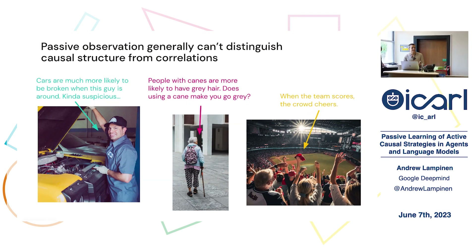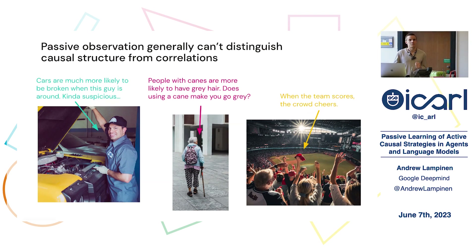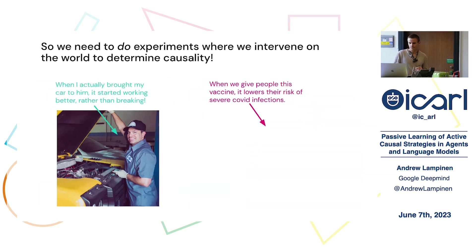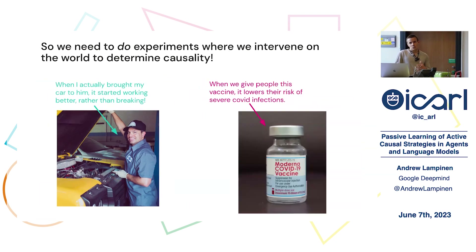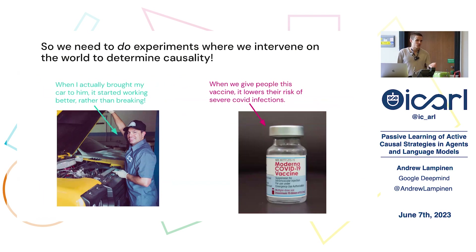For example, if you notice that cars are more likely to be broken when the mechanic is around, you don't know whether the mechanic is breaking the cars. If you notice that people with canes are more likely to have gray hair, you don't know whether gray hair is making you use a cane or canes are making you grow gray. The way scientists get around this is by doing experiments — actual interventions on the world — which allows us to tell the difference between correlational and causal structure.